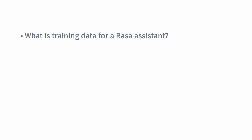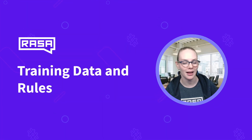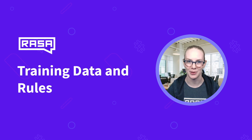So we've covered quite a lot: what training data is for a RASA assistant, stories and rules as ways to help your assistant know what to do next, and intents — where to start whether or not you have data. I know this is a lot of information, and this is probably the most time-consuming part of building any assistant — figuring out the training data, the structure of your intents and stories. But it'll be worth it when your assistant works and your users are delighted.